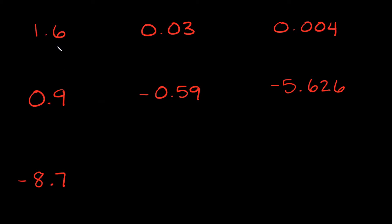So 1.6 — how would you turn this into a fraction or improper fraction? Well, the only thing you have to figure out is what decimal place does this number end in? So this 6 right here — what decimal place is this in? Well, this is the tenths place. So I'm just going to draw a line under my whole number, and it's in the tenths place, so I'm just going to put a 10. So here's my fraction — I'm just going to rewrite it but without the decimal.